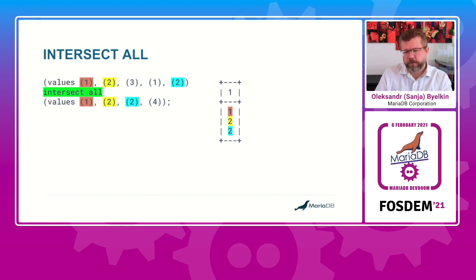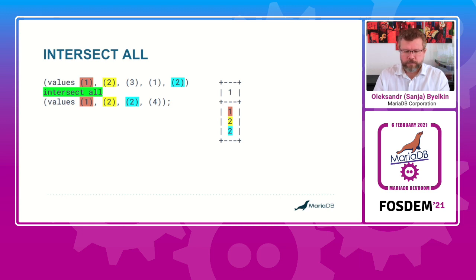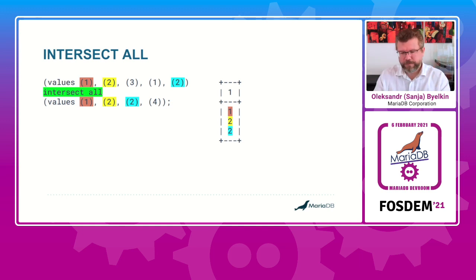For INTERSECT ALL, the best representation is matching records from both sets. If a record finds a match, it will not be used for matching anymore. So we match the first one, then two, then the second two. Everything that was matched goes into the result set — that's 1, 2, and 2. There was no match or pair for 3, the second 1, or 4, so they are not in the result.